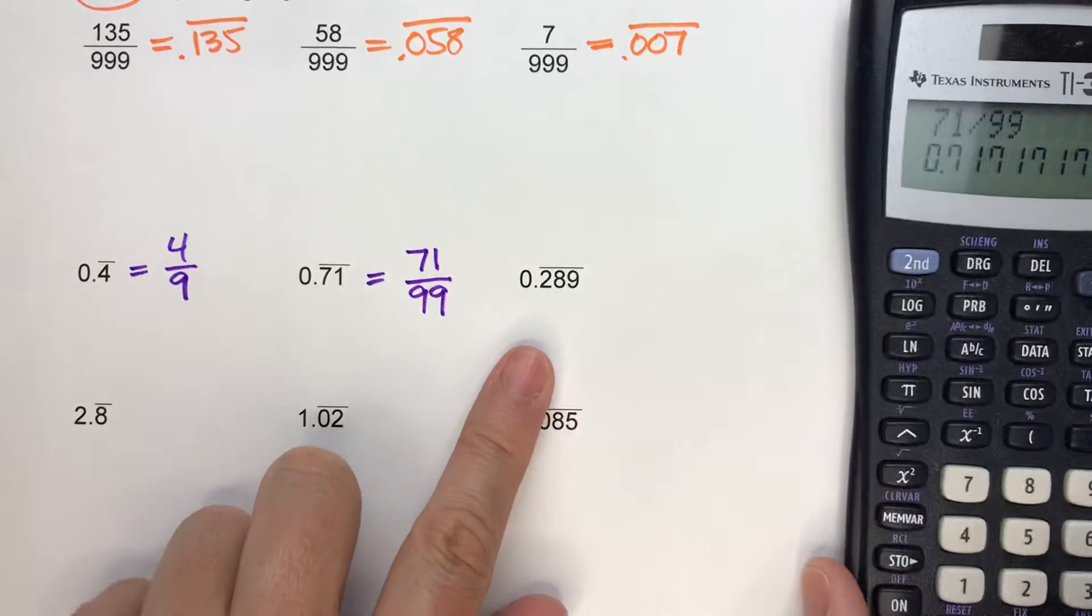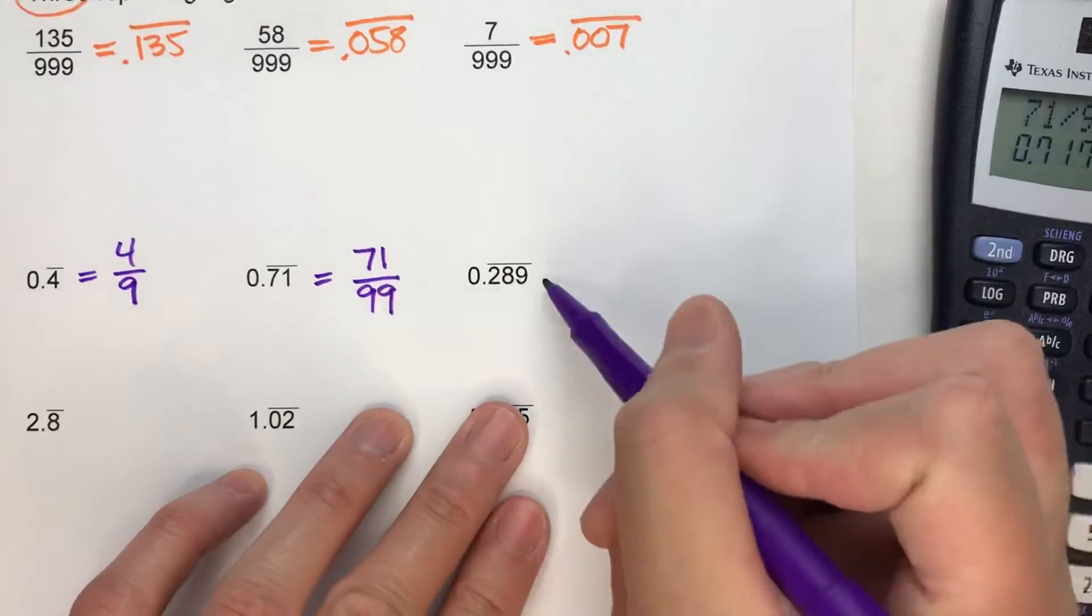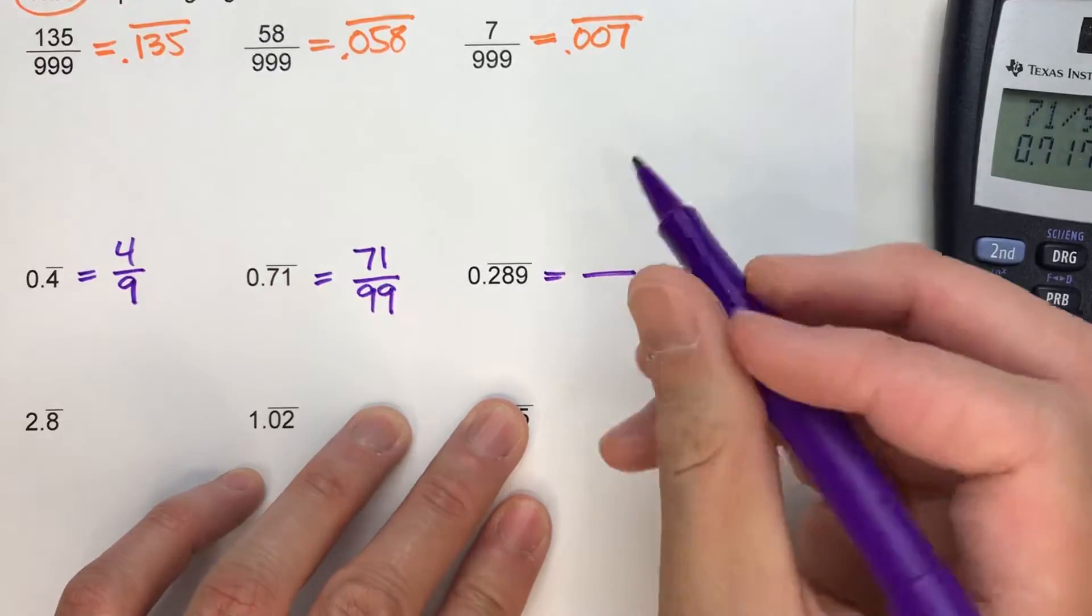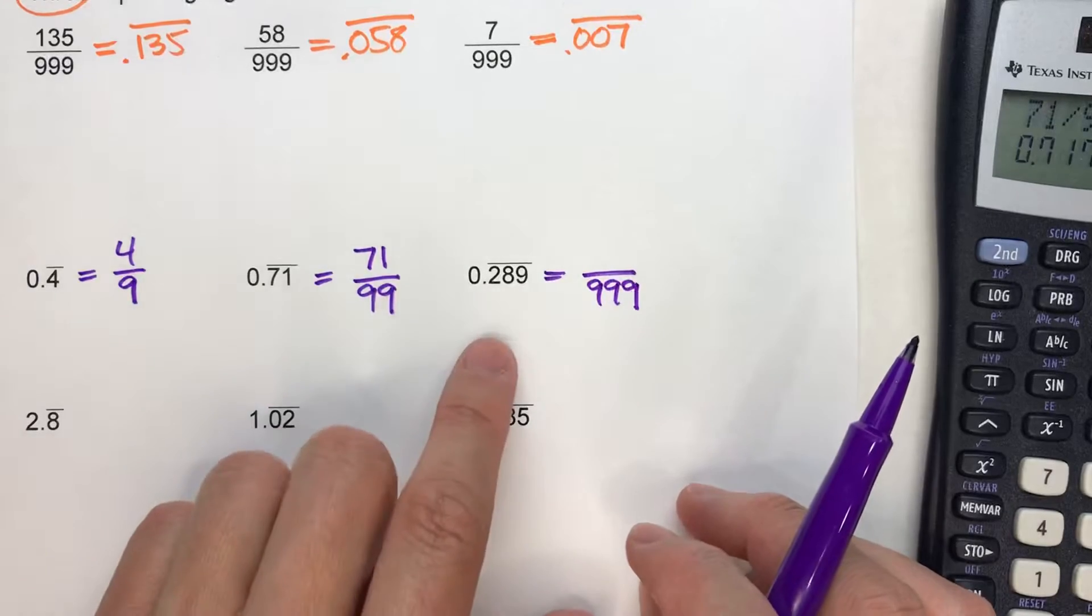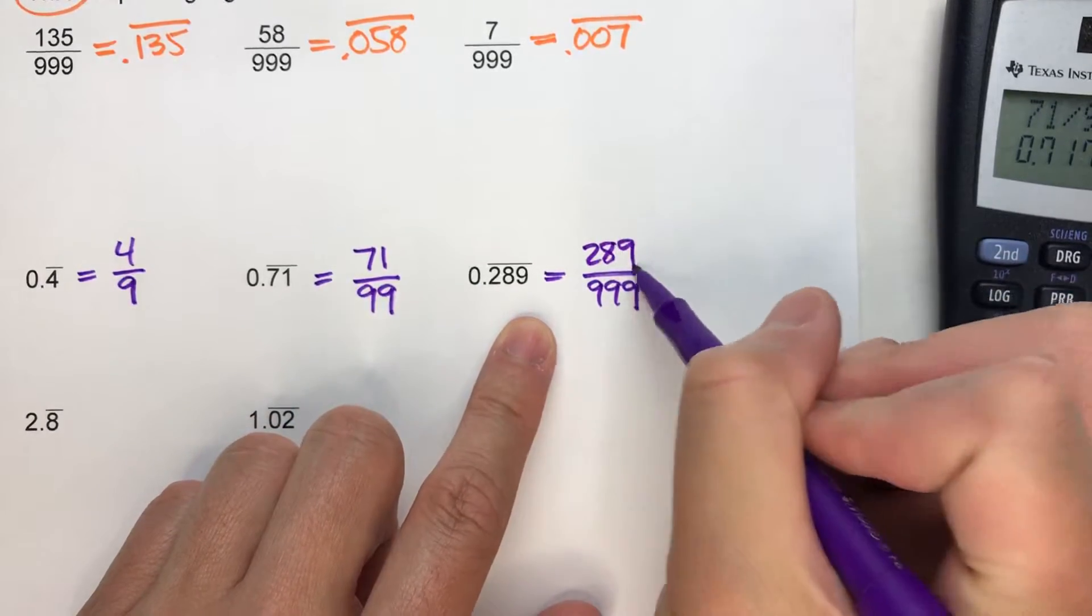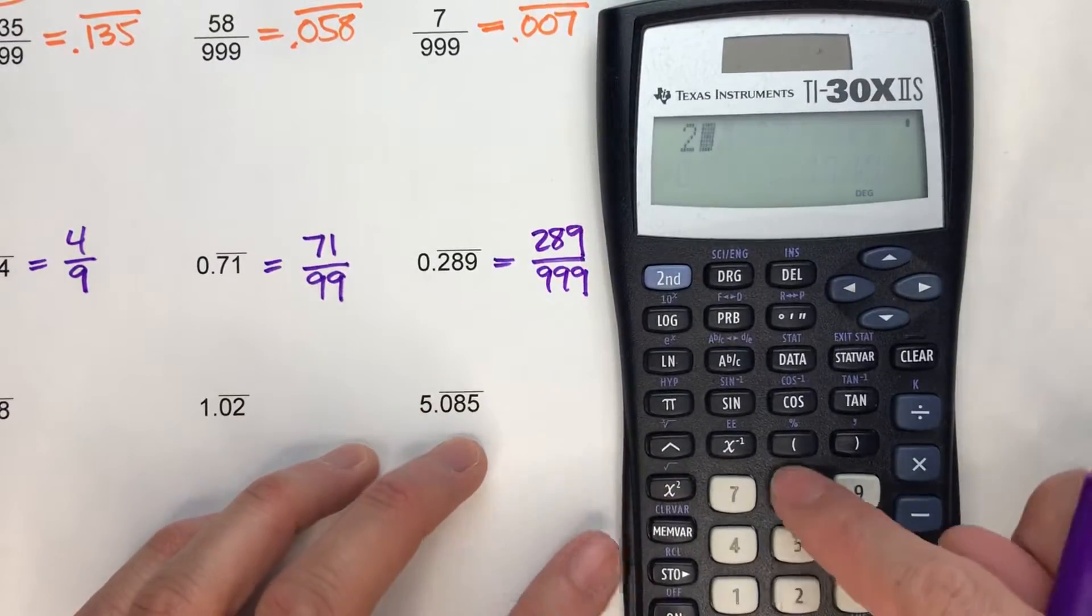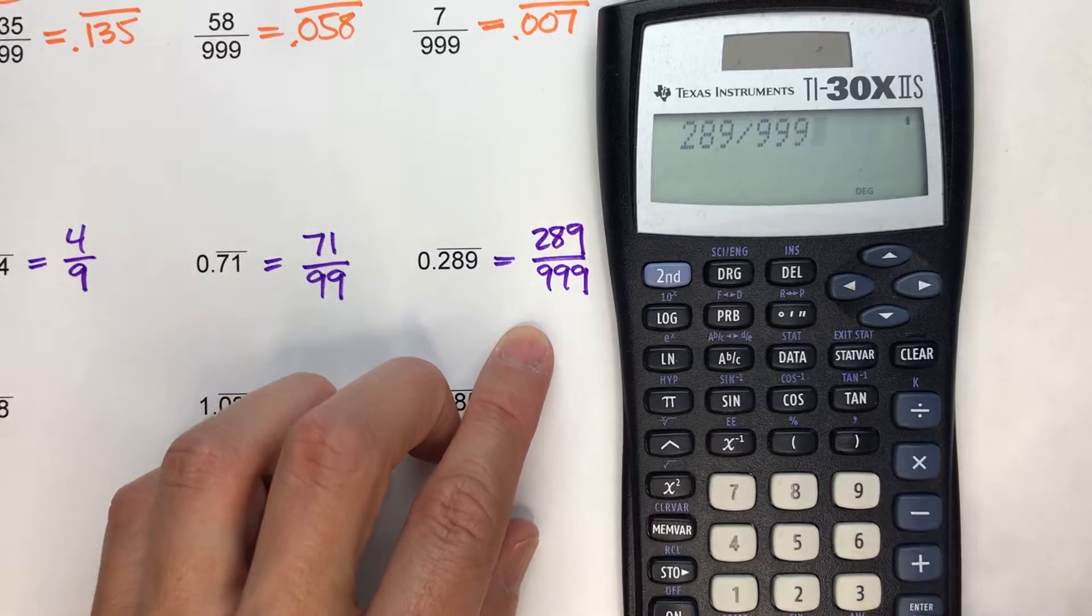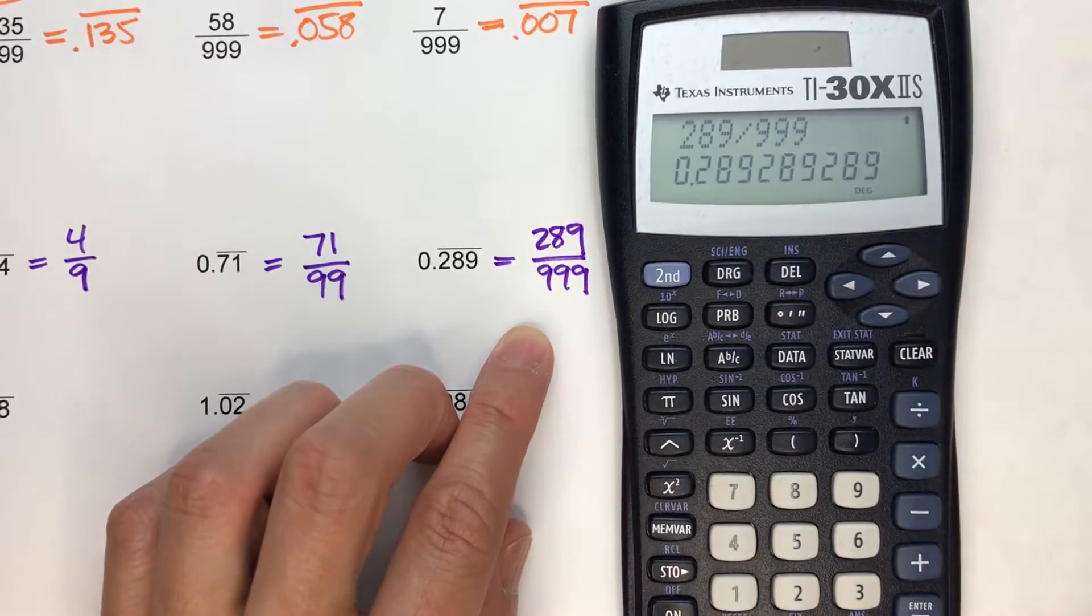And then over here, 0.289 repeating. This time we've got three digits repeating. So that means my denominator is 999. Now what are the three digits repeating? The 2, 8, and the 9. So that's my numerator. And just to check to make sure, 289 over 999? 289, 289, 289, 289. You see?